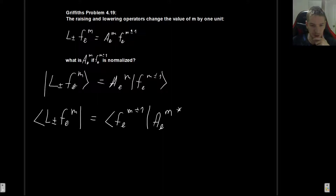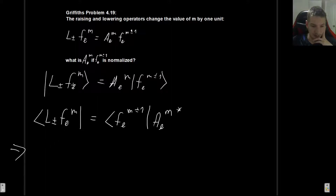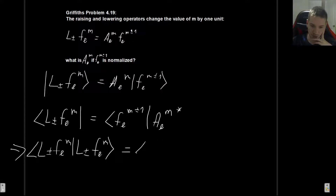Let us now multiply these two equations together. We want to do that so we can get the inner product, because the inner product is the bra multiplying the ket. So the left-hand side is going to be ⟨L± f, l, m | L± f, l, m⟩, and the right-hand side is going to be ⟨f, l, m±1 | f, l, m±1⟩ times |A_lm|².